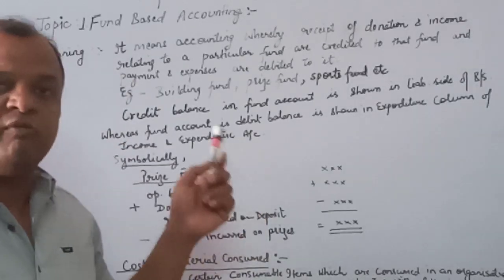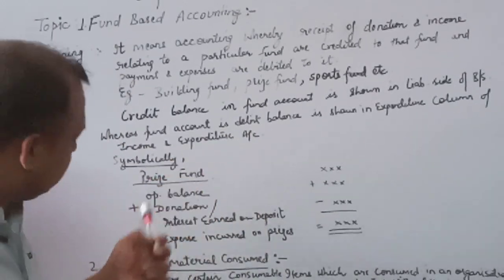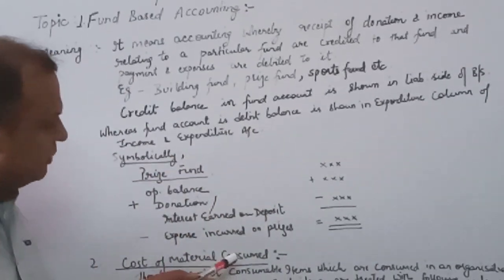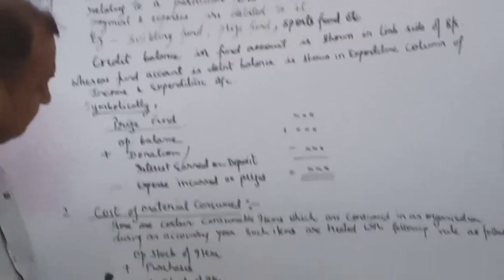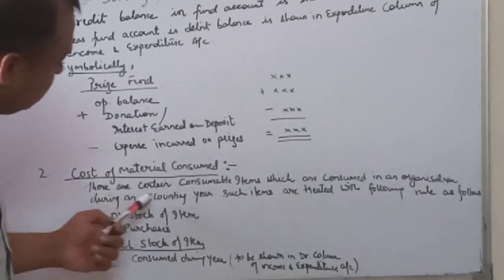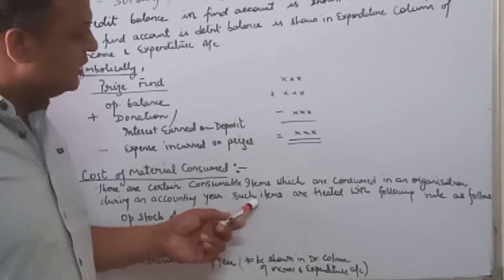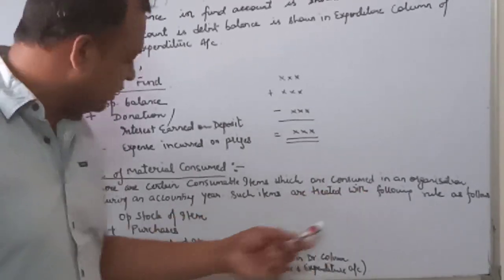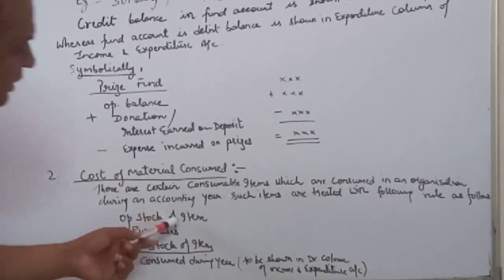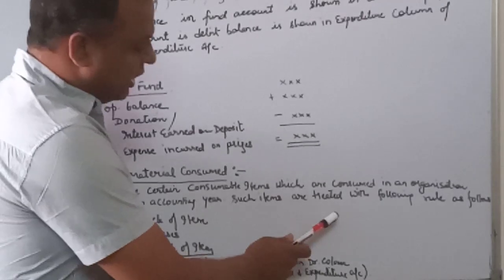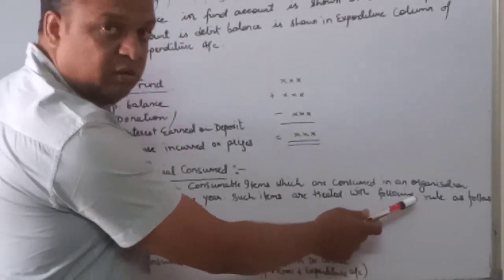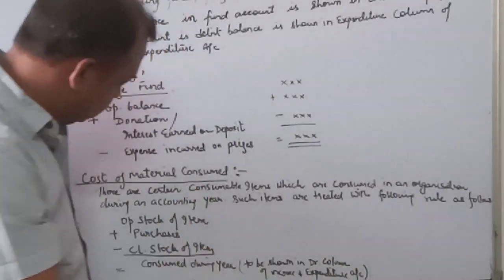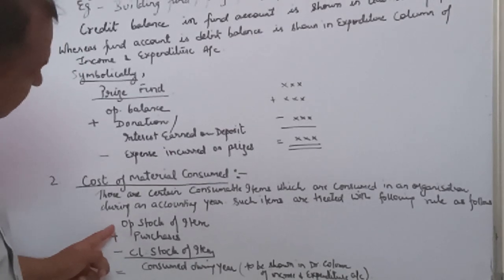The second statement is cost of material consumed. These are certain consumable items which are consumed in an organization during an accounting year. Such items are treated with the following rule.